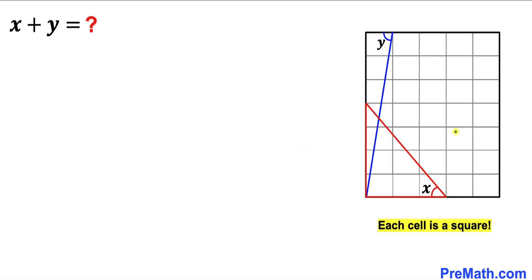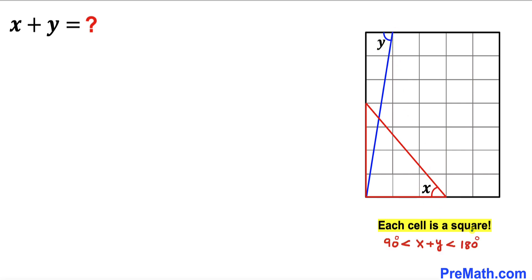Welcome to pre-math. In this video we have a table with grid lines, and red and blue lines are sitting on the table such that the red line makes an angle of x, the blue line makes an angle of y, and each cell in the table is a square — all side lengths are equal. Our task is to calculate angle x plus y, keeping in mind that x plus y is between 90 degrees and 180 degrees.